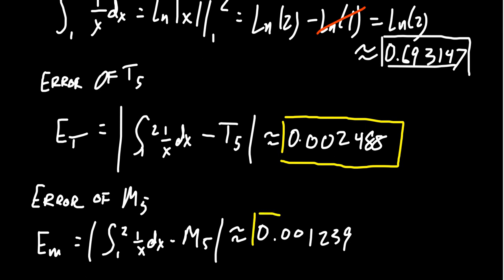And in fact, it did about twice as, it was twice as good, because our error is about half of what we had the error from the trapezoid rule as well.